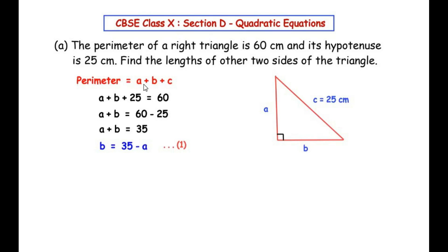We use the perimeter, which is the sum of all sides: a + b + c = 60. Plugging in c = 25, we get a + b + 25 = 60. Taking 25 to the other side gives a + b = 35. Rearranging, b = 35 − a. We will call this Equation 1.